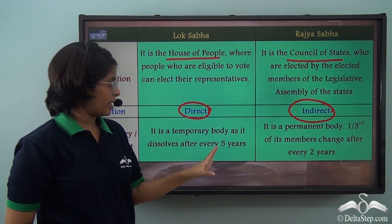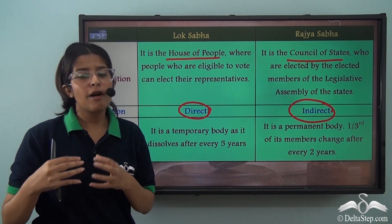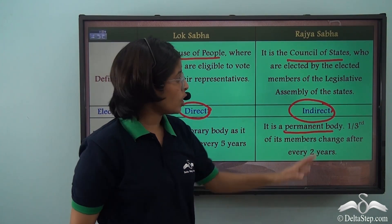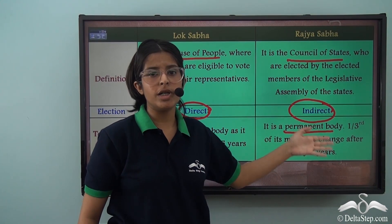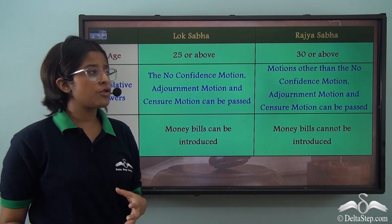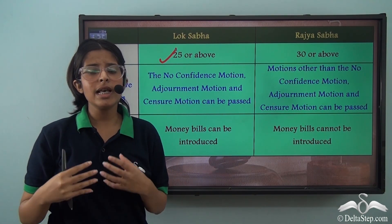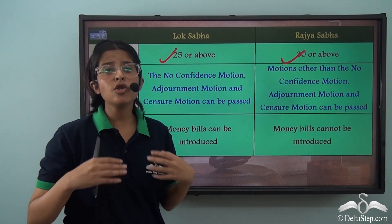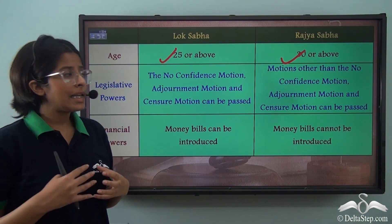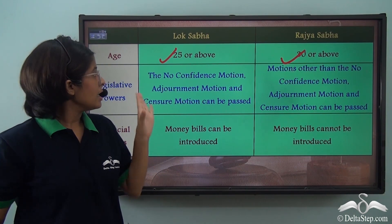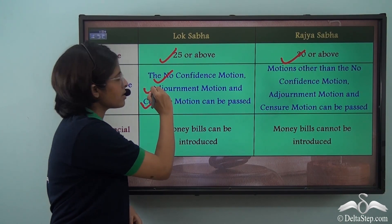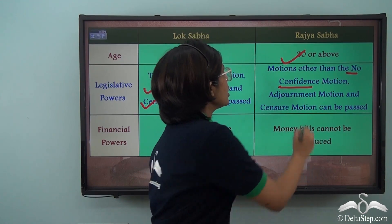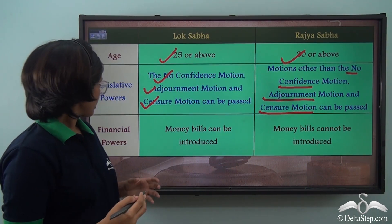The Lok Sabha is a temporary body with a 5-year term, after which the President dissolves it. The Rajya Sabha is a permanent body, with one-third of its members changing every two years. The age eligibility for a Lok Sabha member is 25 years and above, while for the Rajya Sabha it is 30 years or above. In legislative powers, the Lok Sabha can pass all motions and bills, including the no confidence motion, the adjournment motion and the censure motion, whereas the Rajya Sabha can pass all general motions other than those three.